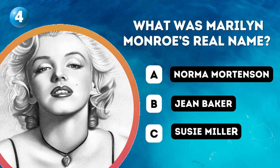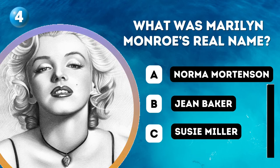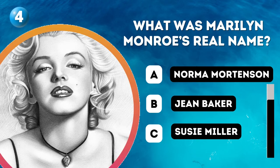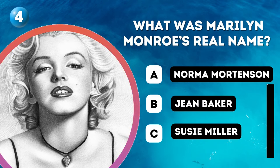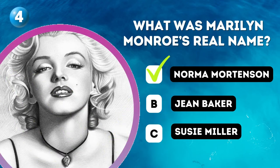Question 4. What was Marilyn Monroe's real name? A. Norma Mortensen, B. Jane Baker, C. Susie Miller. Answer: Norma Mortensen.